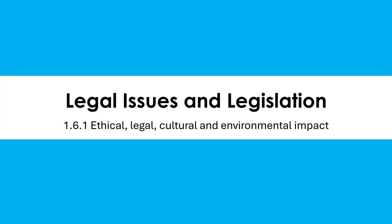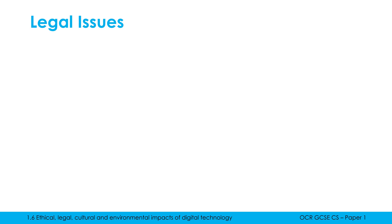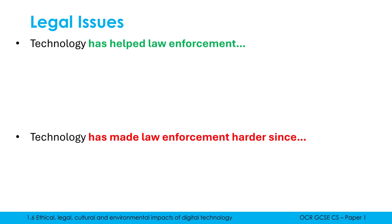Hello. We're now going to focus on legal issues and look at the three laws you need to know about for this paper. Probably nobody's most favourite topic, but it's really important for a computer scientist to be at least a little bit aware of. Before we look at those laws, let's talk more generally about the sort of legal issues you could be asked about in exam questions, including maybe an eight marker.